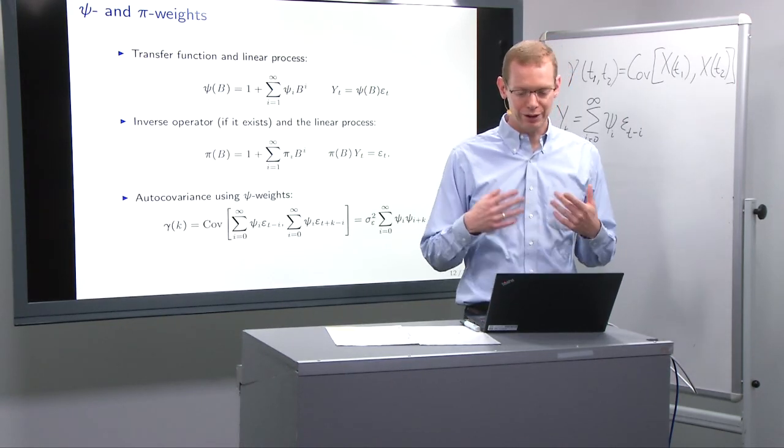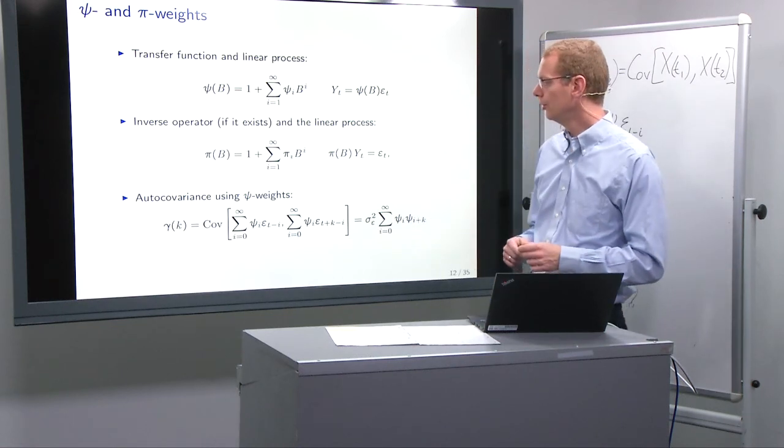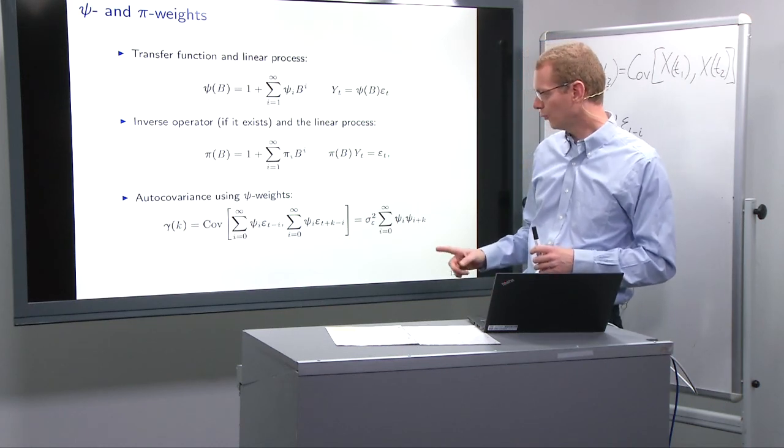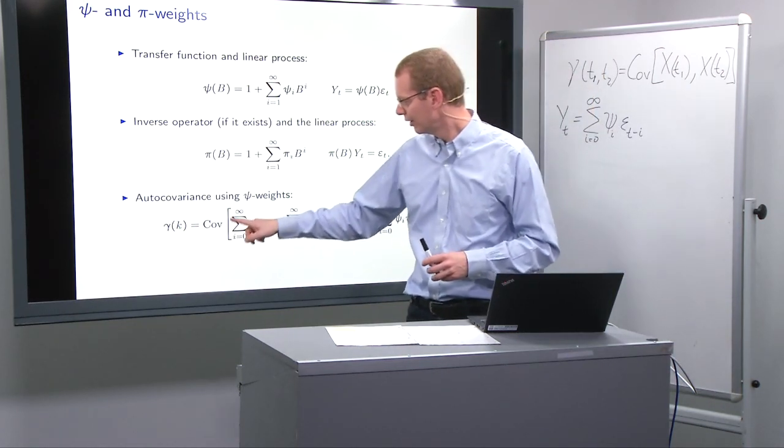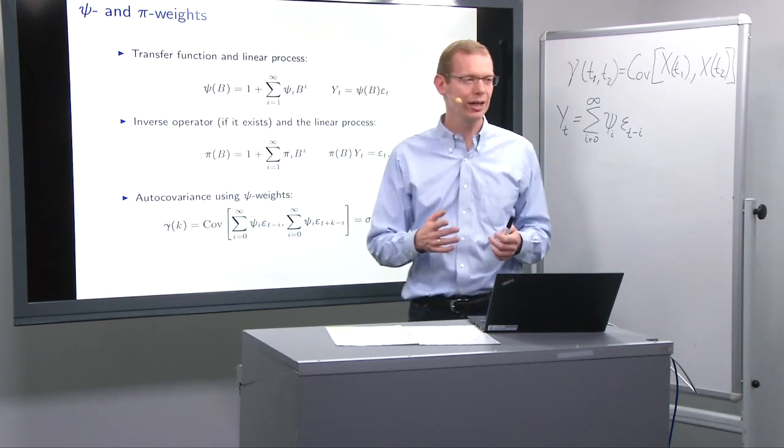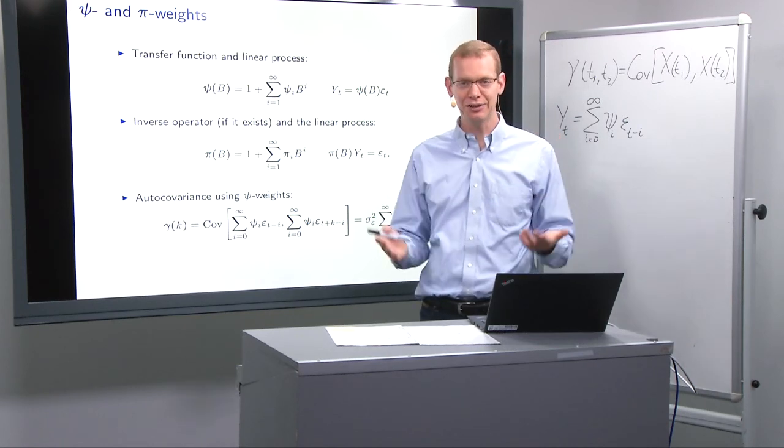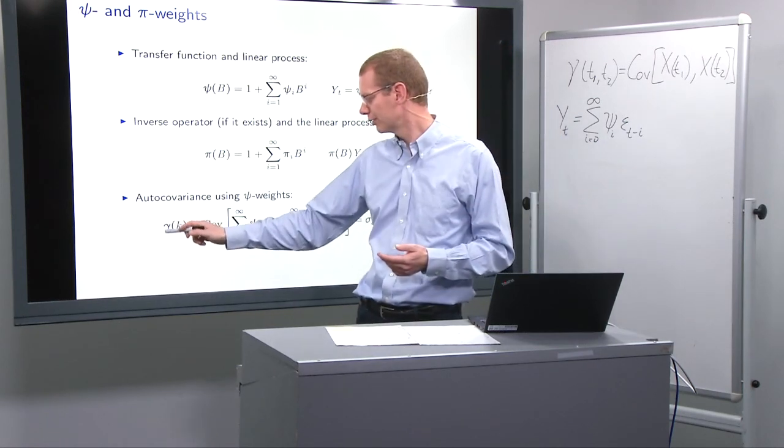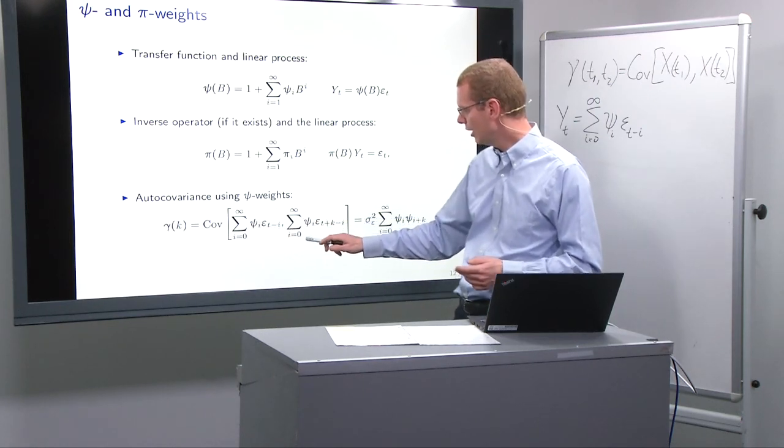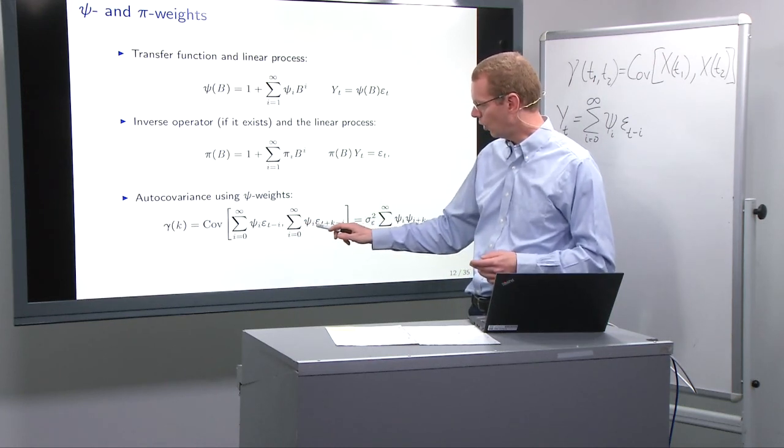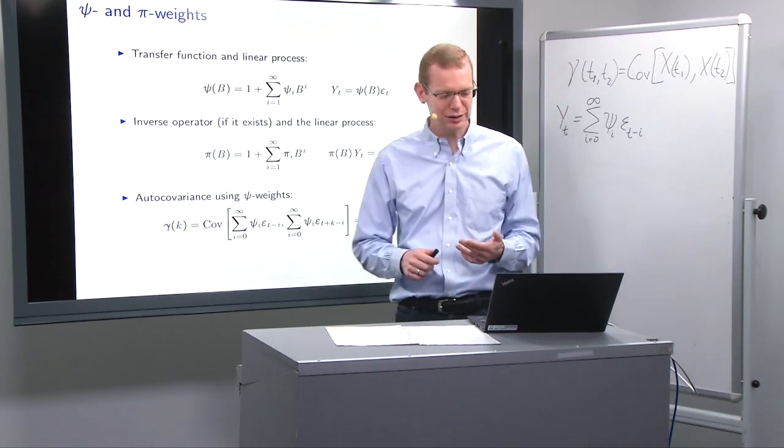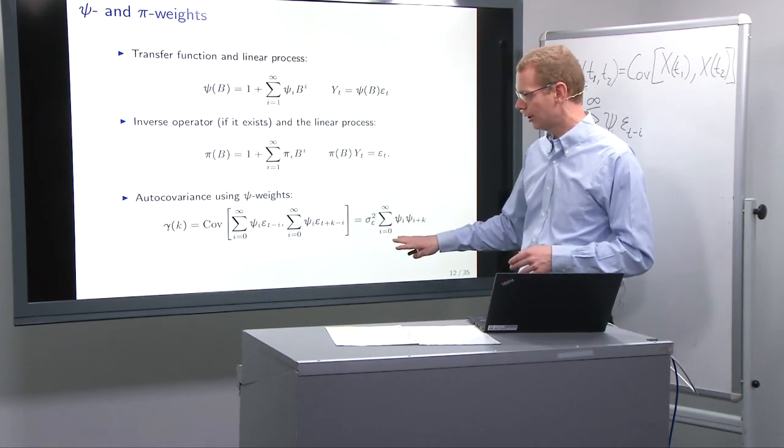If we look at the order covariance using ψ weights as listed up there, what we have to look at is the covariance between this infinite sum and a time lag k. I will typically use k as integer time steps. So here we have the process y_t, and here we have y_{t+k}. So all the epsilons are shifted k steps.